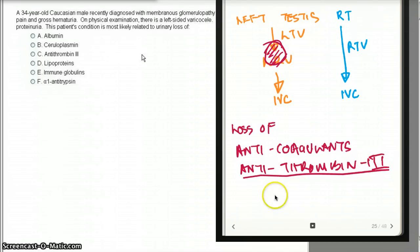There is going to be loss of antithrombin-3, which is a protein made in the liver.